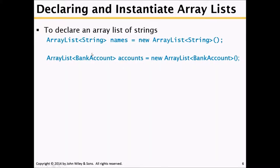Another example: BankAccount is the type and we are creating an 'accounts' ArrayList of type BankAccount. The first part is declaring the ArrayList, and the second part is instantiating it — instantiating requires the new operator, then ArrayList, an open angle bracket, the type, a close angle bracket, and opening and closing parentheses ending with a semicolon.